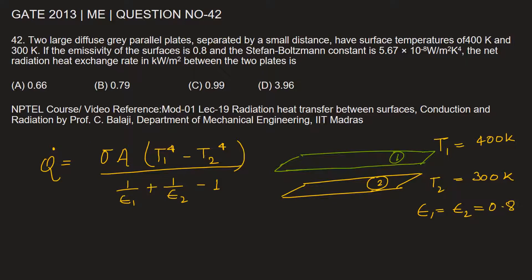Let's substitute all the values in this equation. We need to find per unit area, so q dot by A equals Stefan-Boltzmann constant, that is 5.67 × 10^-8 multiplied by 400 to the power of 4 minus 300 to the power of 4.